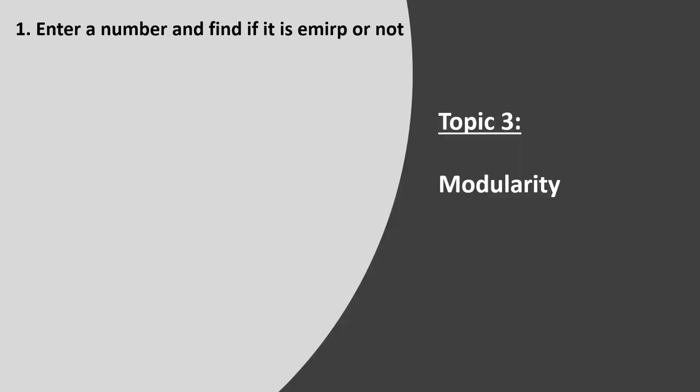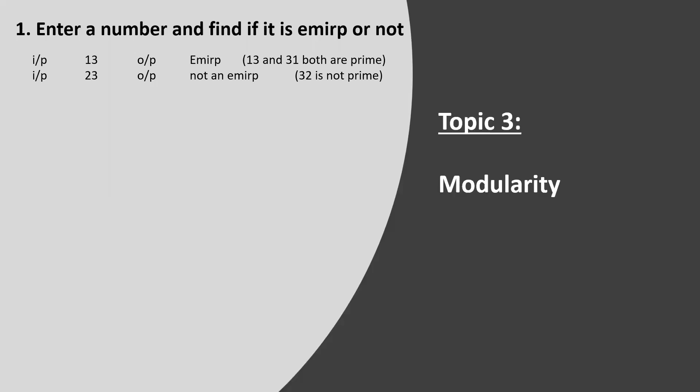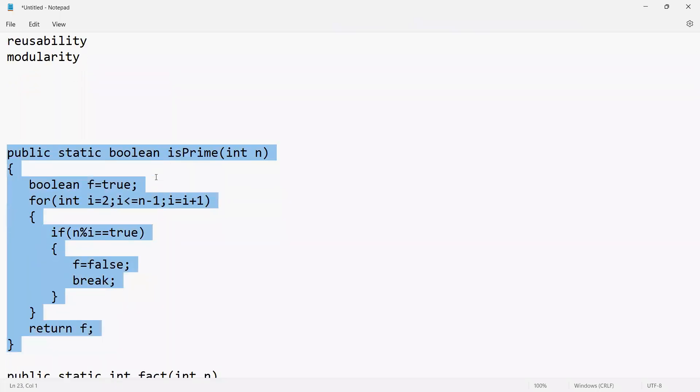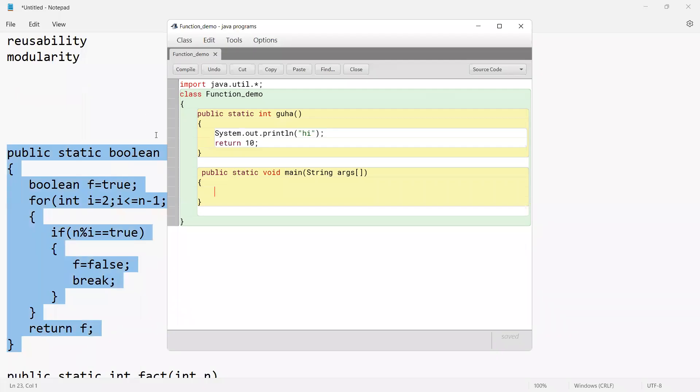Now let me take some real-time program examples for modularity. Suppose the program is: enter a number and find if it is an Emir number or not. The definition of Emir: if a number and its reverse are both prime, we call it an Emir number. For example, 13 is an Emir number because 13 and 31 are both prime. Whereas 23 is not an Emir number because the reverse of 23 is 32, which is divisible by 2, so it's not prime.